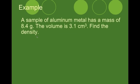Now, here's an example of density. We see that we have aluminum metal that has a mass of 8.4 grams and a volume of 3.1 cubic centimeters. And it wants us to find the density. So we know that our equation equals density equals mass divided by volume.